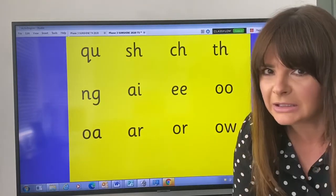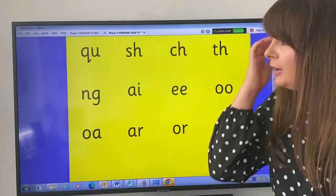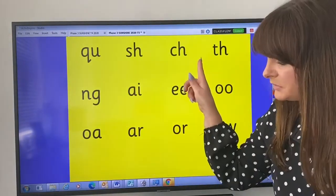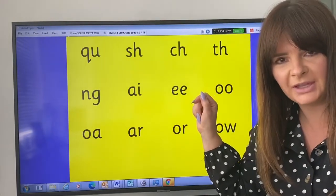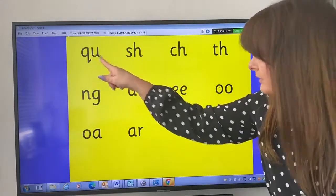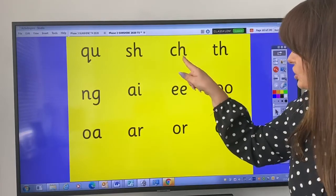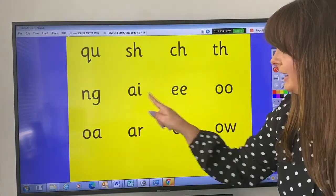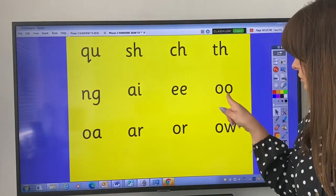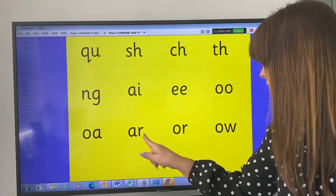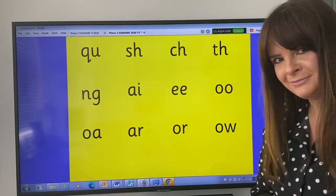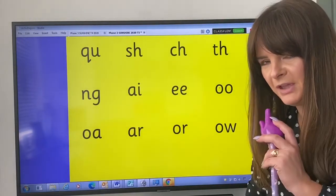Okay, so just like we always do at school, we're going to go through all of the sounds that we've already learned, okay? Just to remind you, we have qu, sh, ch, th, ng, ai, ee, oo, oa, ar, or, ow. Now your turn, try and keep up with the finger. Remember I do go quite fast, off you go.